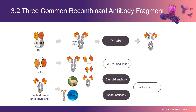Single domain antibody (sdAb) was discovered in camelids and nurse sharks, consisting of a lone VH domain lacking a paired VL, attached to a constant region. The primary advantages of domain antibodies compared with scFvs are generally better folding and stability characteristics, the absence of the linker, and smaller size.